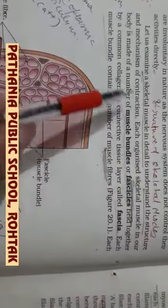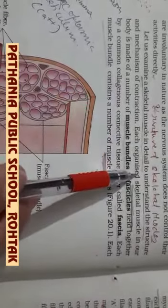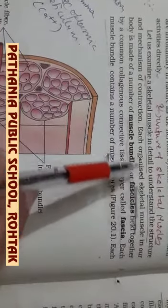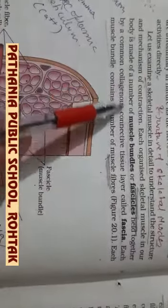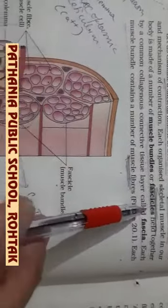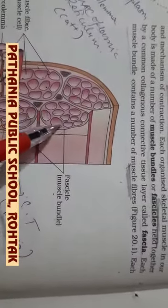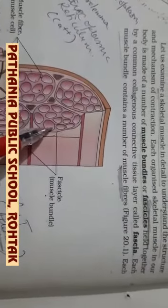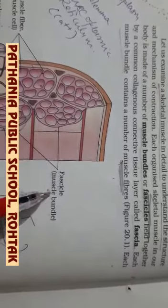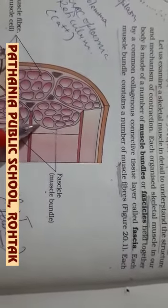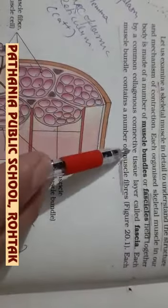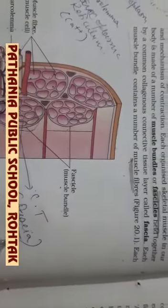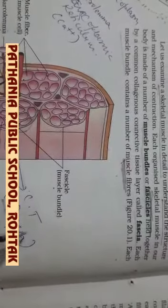So before discussing the contraction of the muscle, we will see the structure of the muscle in detail. Skeletal muscle is actually made up of a number of muscle bundles called fascicles, which are being shown here. These round structures are showing the fascicles or muscle bundles. These are held together by a collagenous connective tissue layer called fascia, shown here in light brown color.